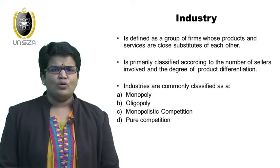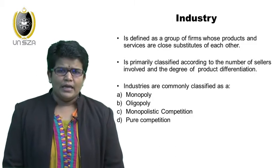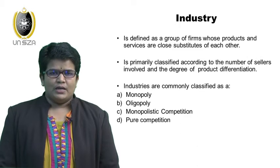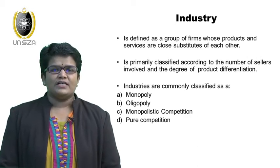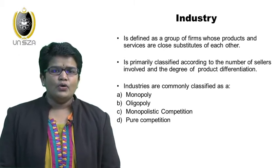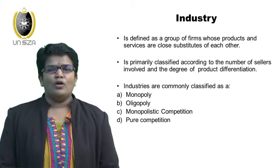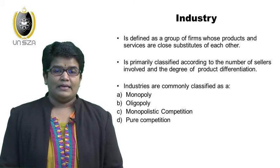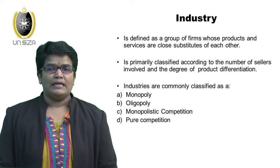The four categories are: monopoly, where you only have one seller; oligopoly; monopolistic competition; and pure competition. As an entrepreneur, you should know which industry you are playing in — are you in monopoly, oligopoly, monopolistic competition, or pure competition? You need to know and understand the structure of the market as well.